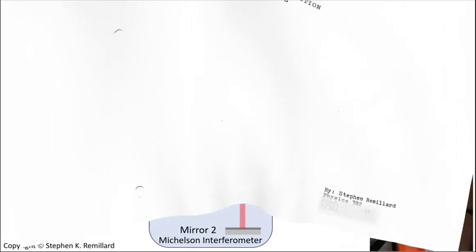Here's that lab report I mentioned, written back when we still used typewriters. An incoming laser beam was split and sent toward the two mirrors of a Michelson interferometer. The reflected beams recombine and are expanded, revealing interference fringes.